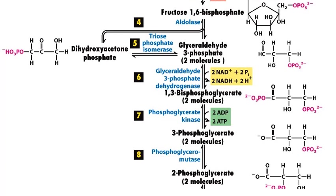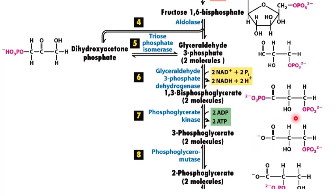After this, in step number 7, the 1,3-biphosphoglycerate donates one of its phosphate groups to ADP, making a molecule of ATP and turning into 3-phosphoglycerate called 3-PGA. In this process, there are 2 molecules of 1,3-biphosphoglycerate and the reaction will yield 2 molecules of 3-PGA and 2 ATP.